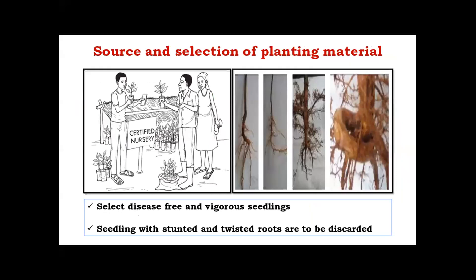By end of June, the Dadaf stakes are established. August and September is the planting period, and we should go for the selection of planting material. Even if we have all ideal conditions, failing to select good seedlings will ultimately affect the whole plantation. Disease-free and vigorous seedlings should be selected, while seedlings with stunted and twisted roots should be discarded. Seedlings should be sourced from a certified nursery.